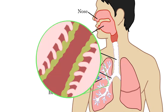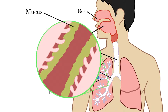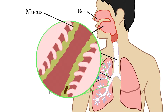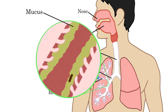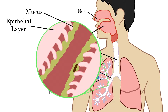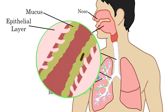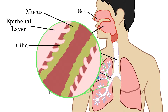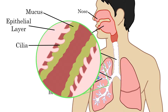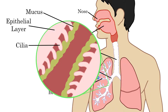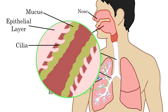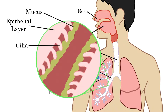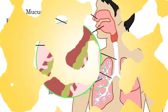The airways are also lined with mucus, which traps foreign inhibitors, and with a layer of cells called the epithelial layer, which has hair-like cilia for brushing mucus and foreign particles out of the airways like a conveyor belt, so it can be swallowed.